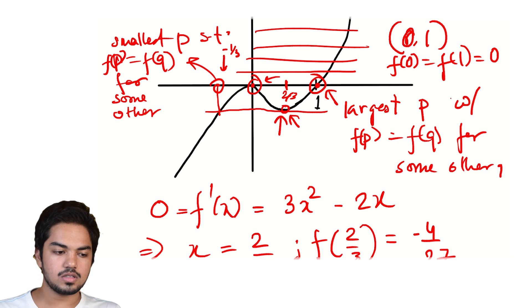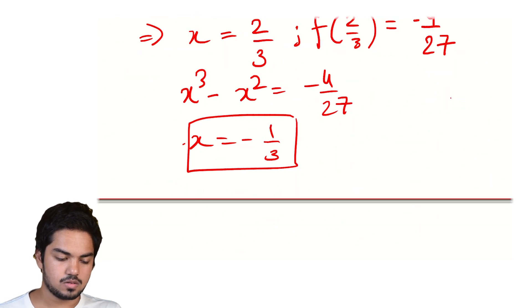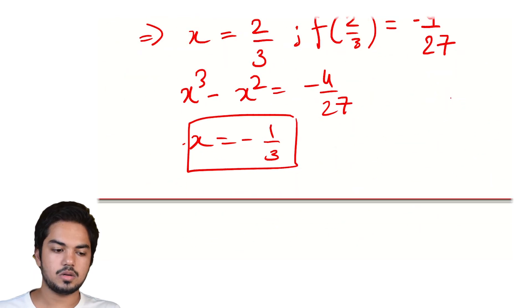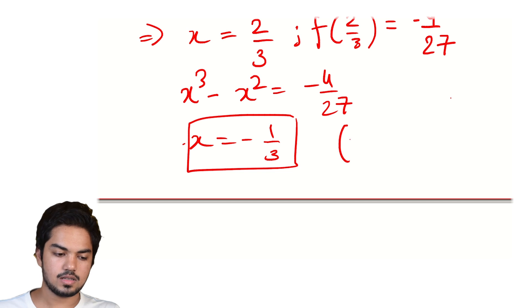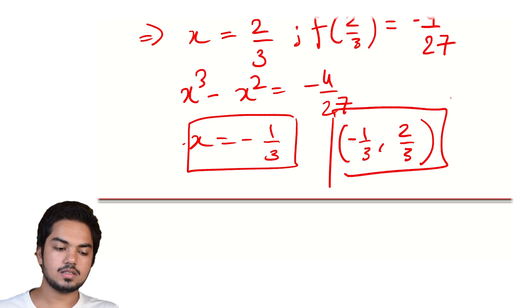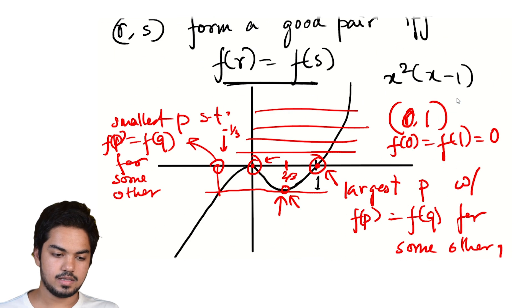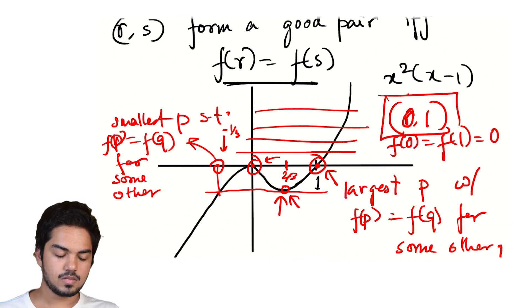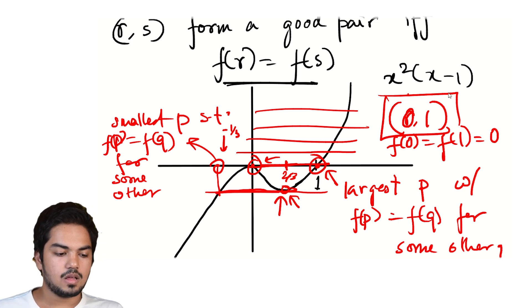And so the pair, and this is that, this is this value. This is -1/3. And so the first part is almost over. Our smallest good pair in terms of one of the coordinates is (-1/3, 2/3). This is the smallest and this is the largest. Corresponding to this value of f and this value of f respectively.